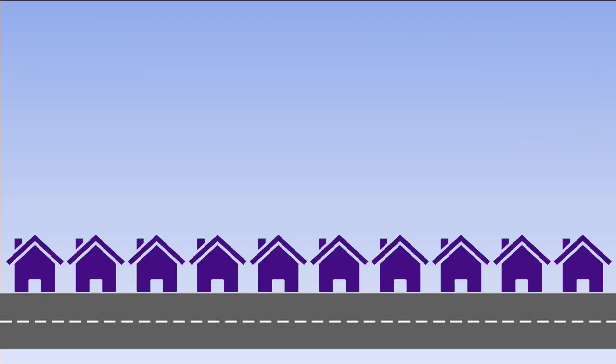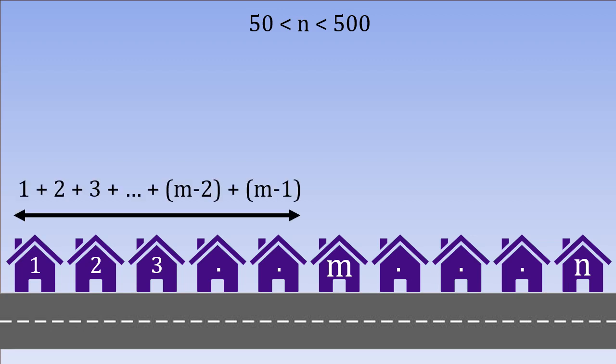In a street, there are houses numbered as per their location. The first house is numbered 1, the second house is numbered 2, the third house is numbered 3, and so on. The total number of houses on the street is between 50 and 500. However, there is one special house numbered M such that the sum of the numbers before that house equals the sum of the numbers after that house. The puzzle is to find out the house with this special property and the total number of houses on the street.